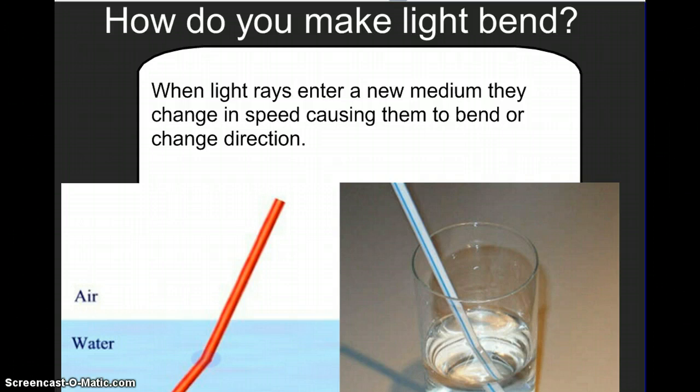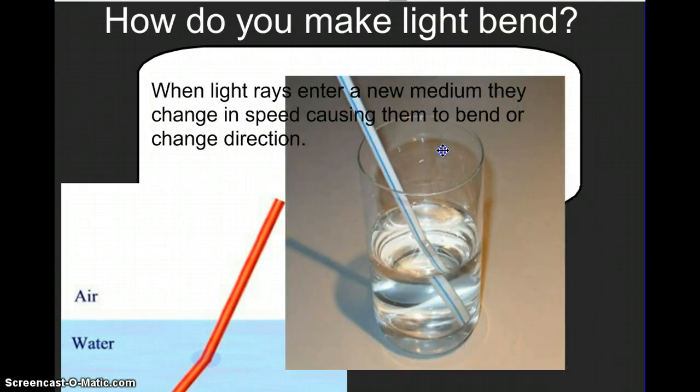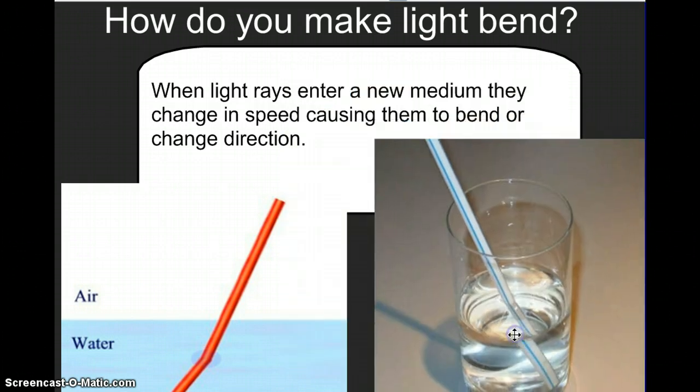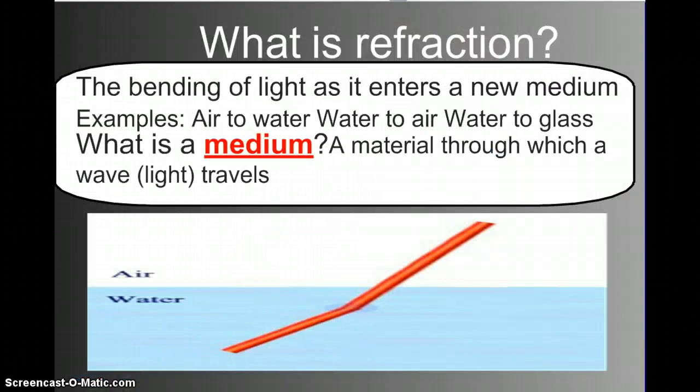How do you make light bend? What? You can make it bend? Yes, you can. It travels in straight lines unless it's going through a new medium. And when it's going through a new medium, that change in speed, that change in direction causes light to bend. So we put a straw in a water glass and it looks like it's bent or broken, but it hasn't actually bent or broken. The light waves are just being slowed down. So this is what we call refraction. Refraction is the bending of light as it enters a new medium.